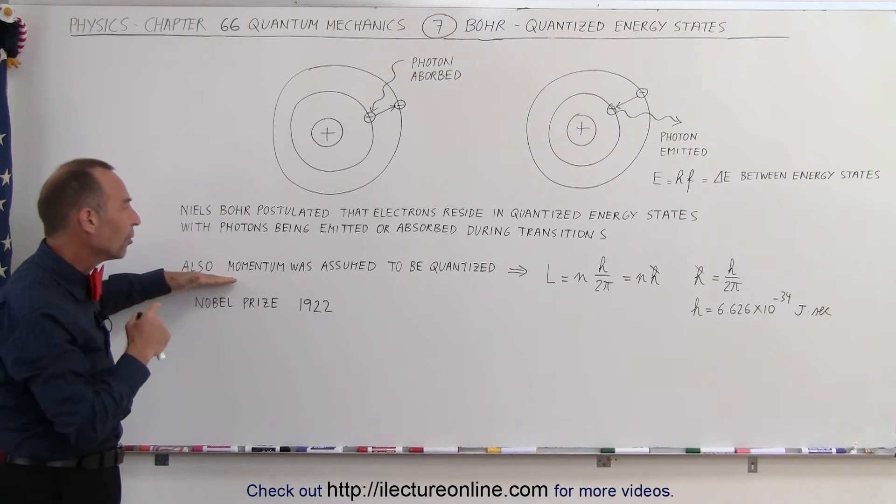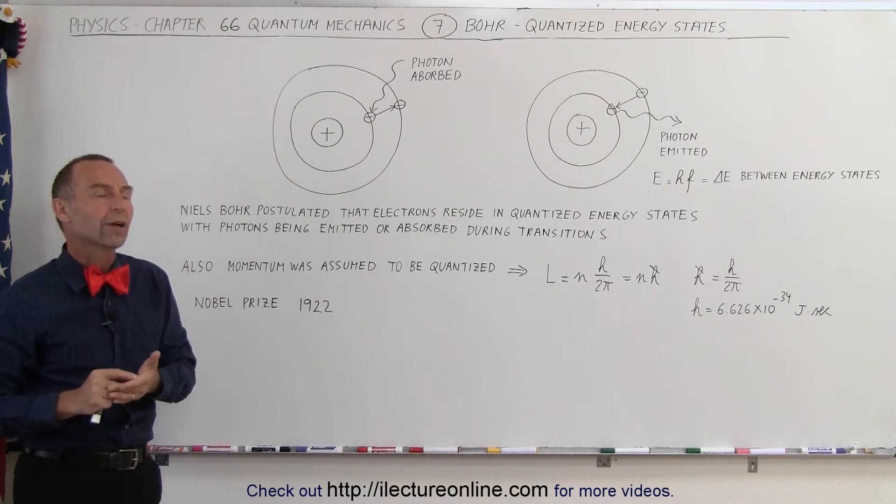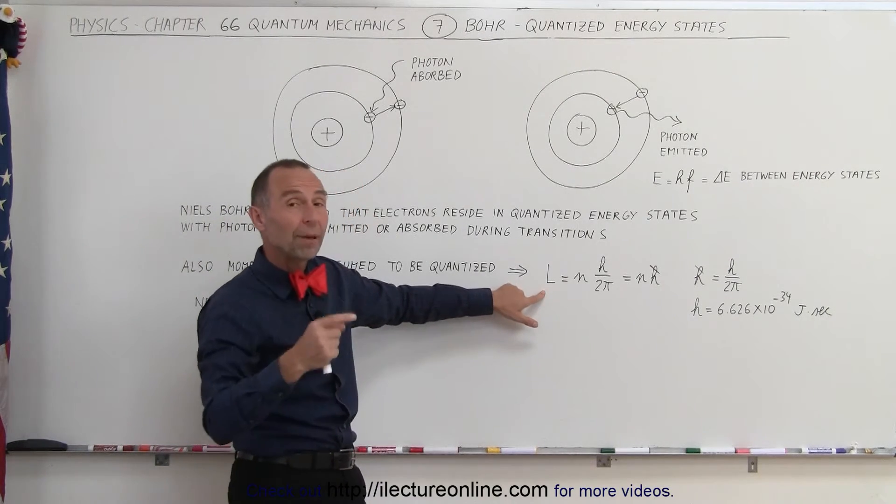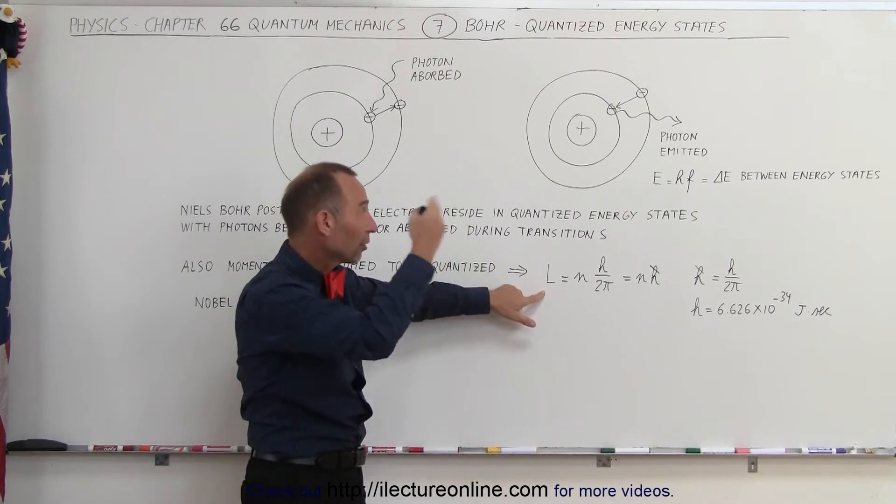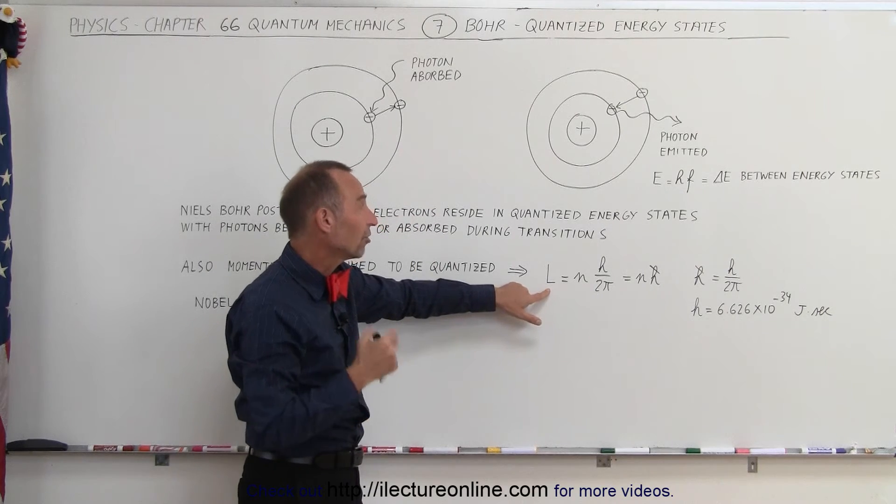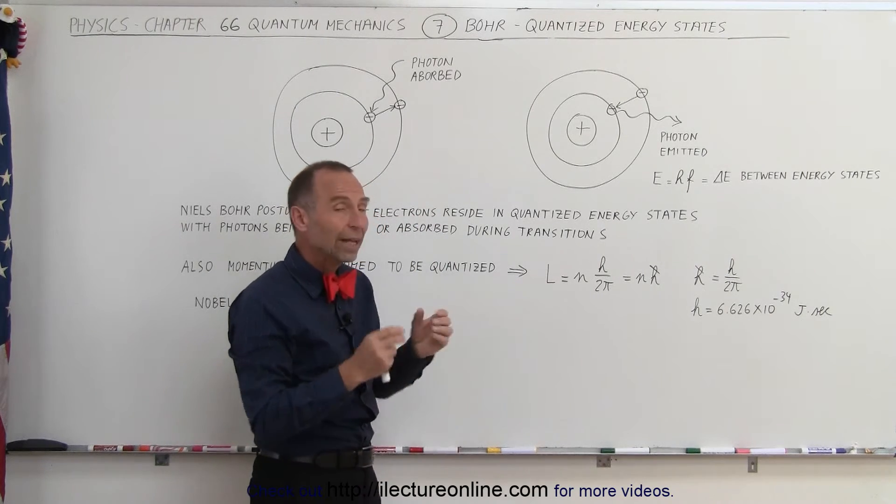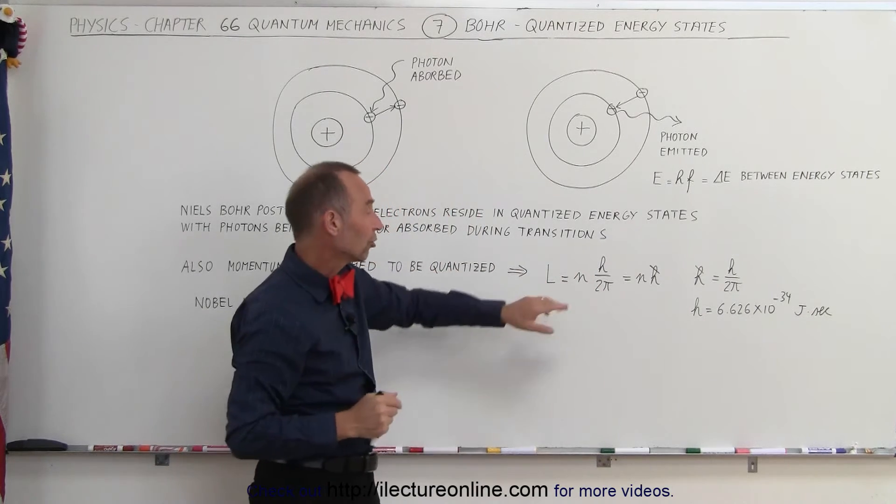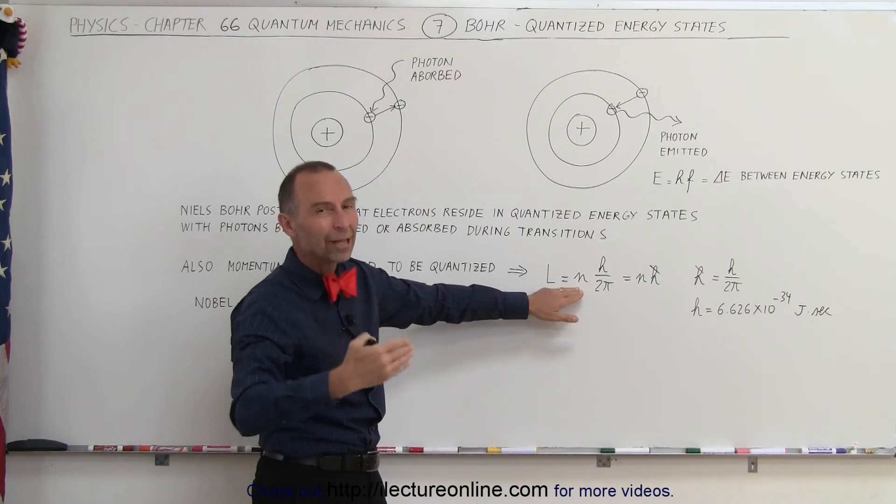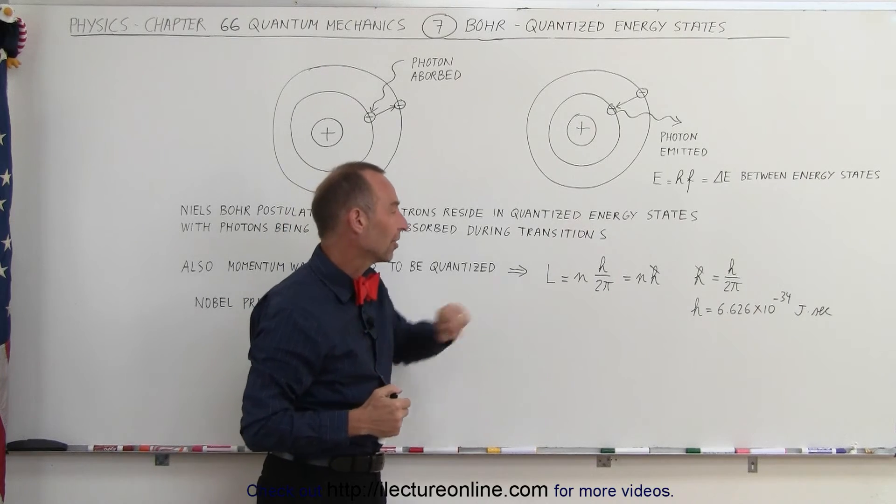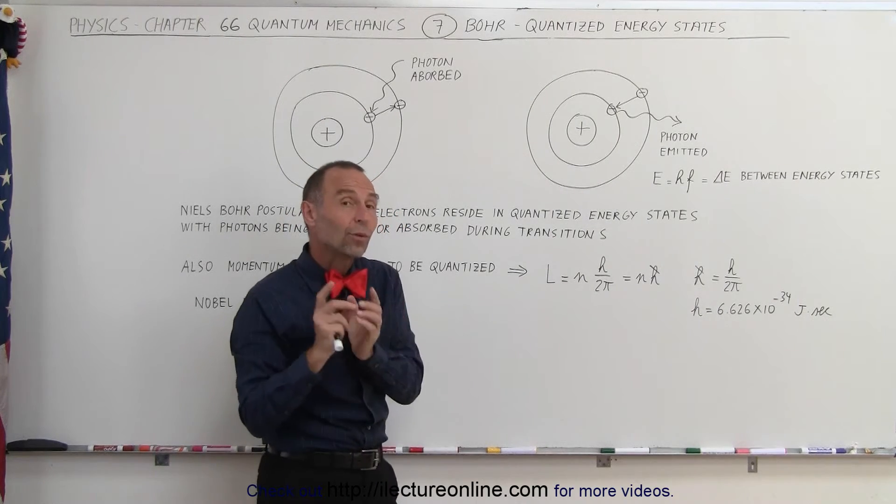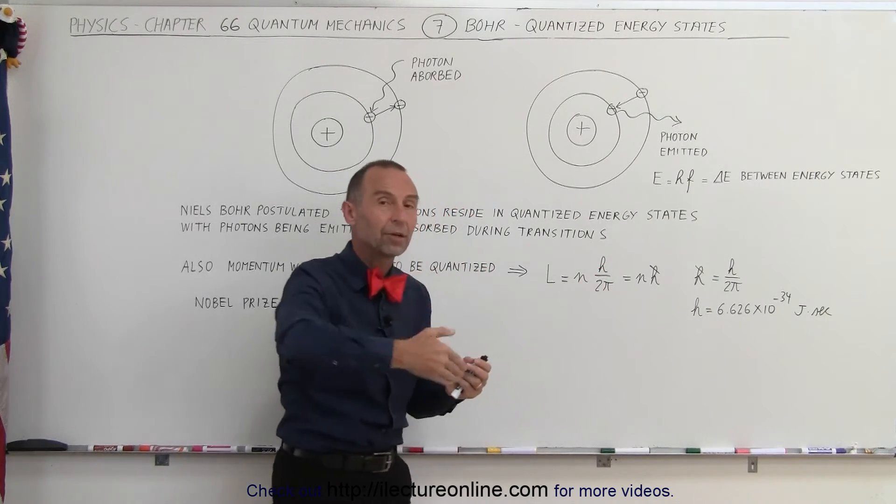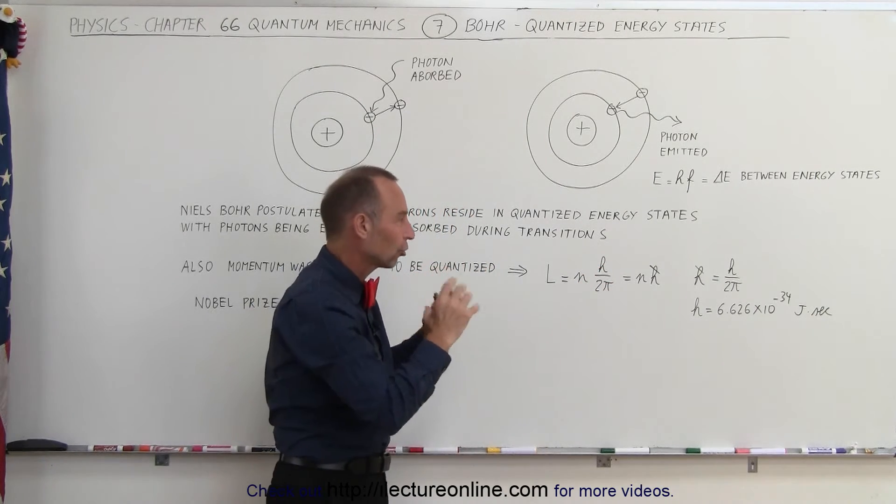He assumed that momentum would also have to be quantized, and came up with an equation indicating that the angular momentum of objects like electrons in orbital situations inside atoms would be an energy number times a constant. The energy number would be the angular momentum quantum state. The constant was assumed to be H divided by 2π because of the angular momentum, the circular situation where the circumference equals R times 2π.